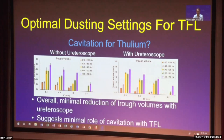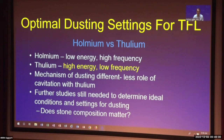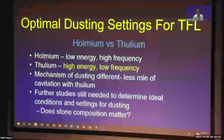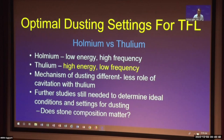In conclusion, what are the optimal dusting settings? For holmium: low energy, high frequency, probably with a standoff distance of 0.5 mm. For thulium: high energy, low frequency, shorter pulse duration, in contact with the stone — with lower overall energy and lower risk of heat injury. This is likely due to the different mechanism of dusting, meaning less role of cavitation with thulium. Further studies are still needed to deduce the full mechanism for thulium. Key outstanding questions include which laser is better for which stone composition, and whether settings vary based on stone composition. Thank you for the opportunity to present.